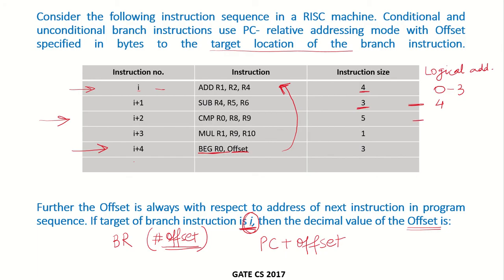That means I plus 2 would start at address 4 plus 3, which is address 7. I plus 2 is of size 5, so I plus 3 would start at address 7 plus 5, which is 12. I plus 3 is of size 1, so I plus 4 would start at address 12 plus 1, which is 13.